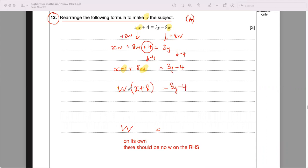That's an invisible multiplication, times here. To get rid of it, we do the opposite operation, so we're going to divide. I'll just write it as a fraction, and that will cancel out. So we've got 3y minus 4 divided by x plus 8. I got w on its own, and I got no w on the right hand side.